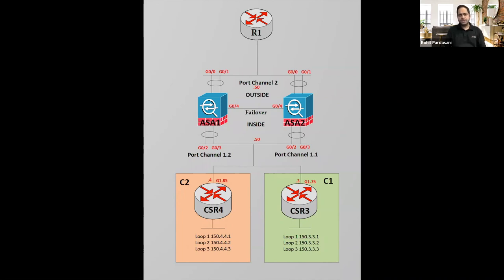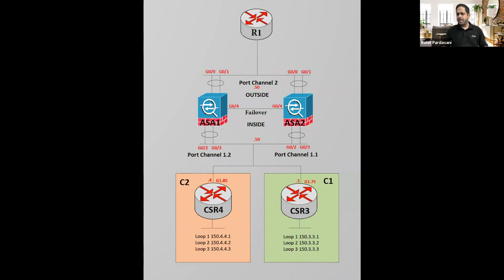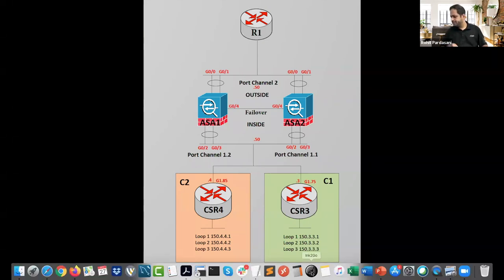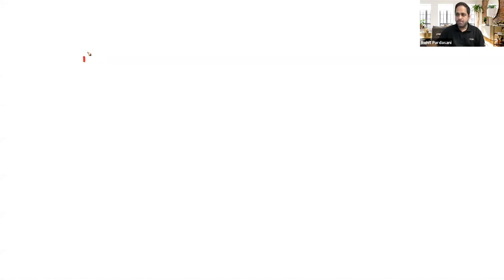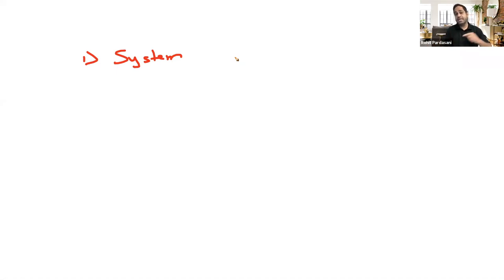There are some prerequisites when creating virtual firewalls. System context is there by default, but you also need an admin context. Let me draw it out. If you have a physical box and change the mode to multiple, once the ASA boots up, you boot into system context. System context is used to manage the physical resources of the physical ASA — for example, creating virtual firewalls and allocating resources is done from the system context.